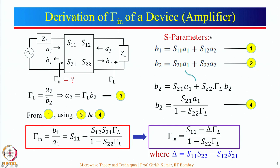S-parameters are defined in terms of b1 and b2: b1 = S11·a1 + S12·a2, and b2 = S21·a1 + S22·a2. Now let us look at gamma_L. The reflection coefficient is defined as reflected wave divided by incident wave. Looking at the output side, the reflected wave is a2 and the incident wave is b2. So gamma_L equals a2 divided by b2, which gives us a2 = gamma_L · b2.